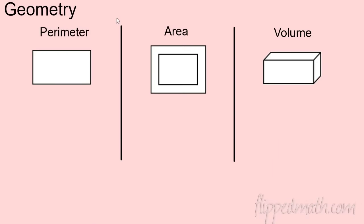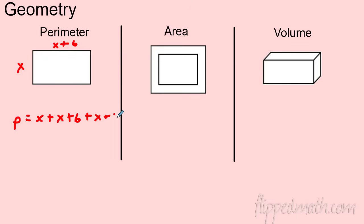Now let's see how this applies to geometry problems. For perimeter, if the width is x and the length is six more than x, you add all sides: x plus (x + 6) plus x plus (x + 6). That gives you a linear expression — perimeter problems produce linear functions.